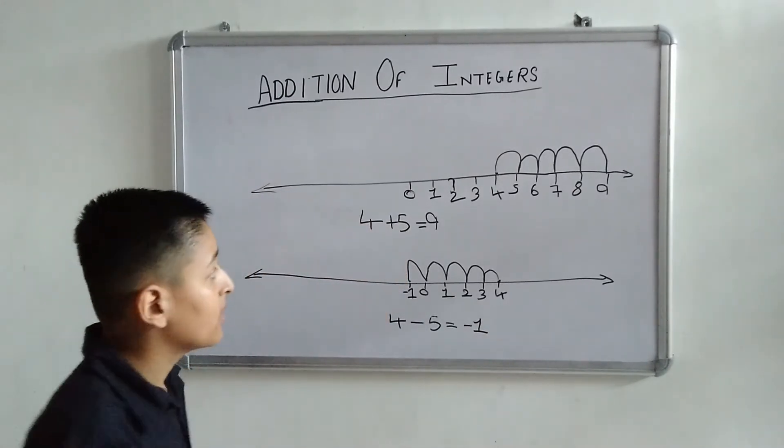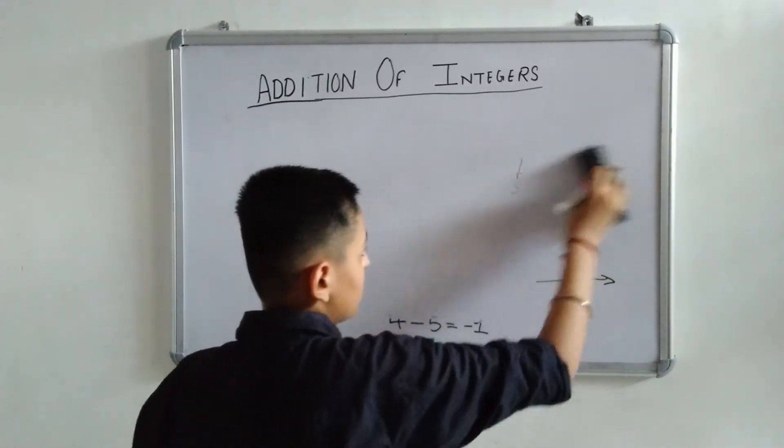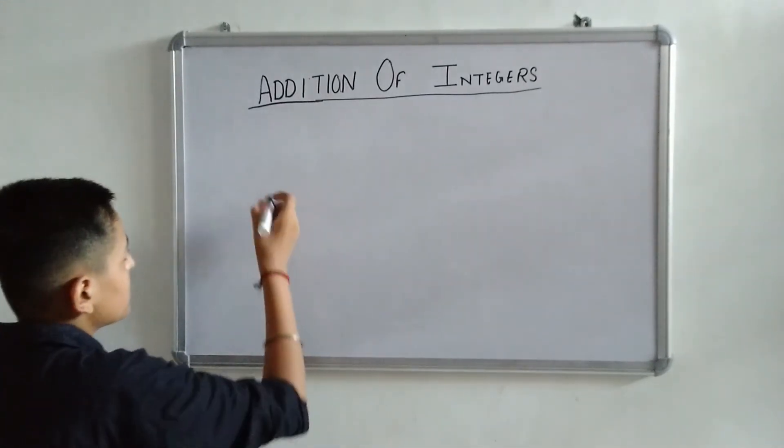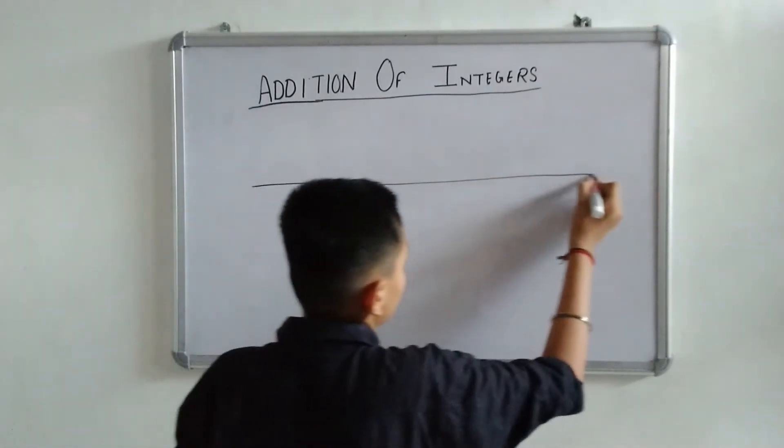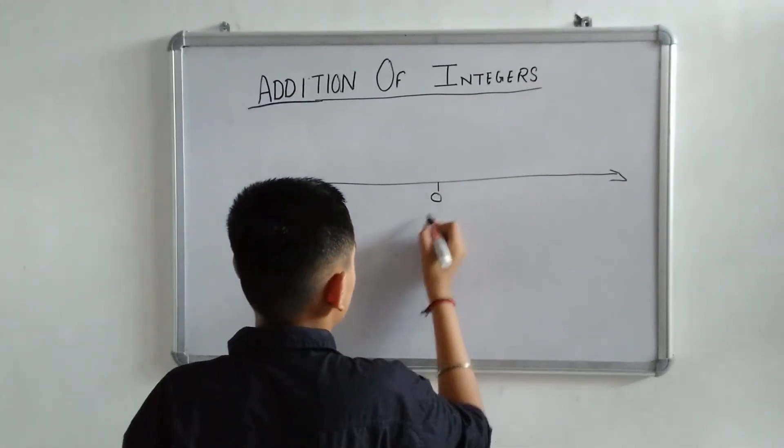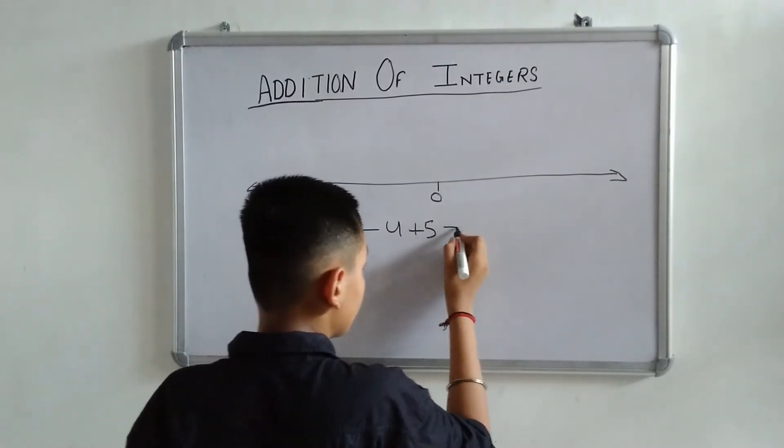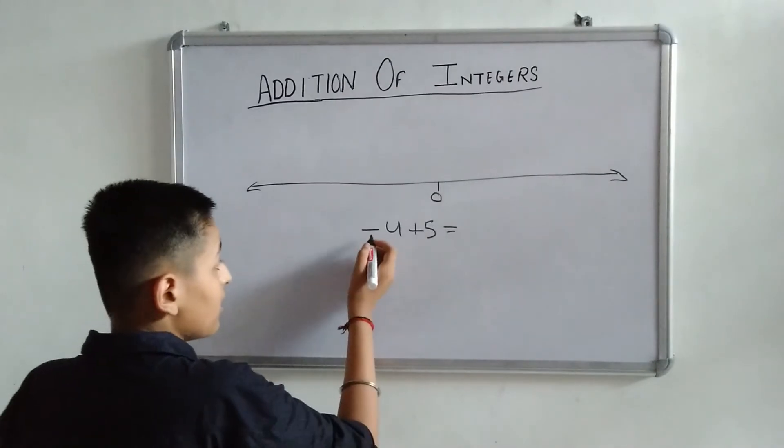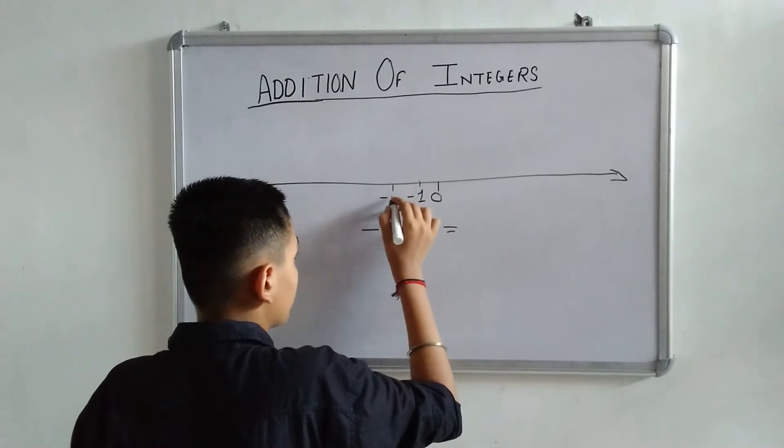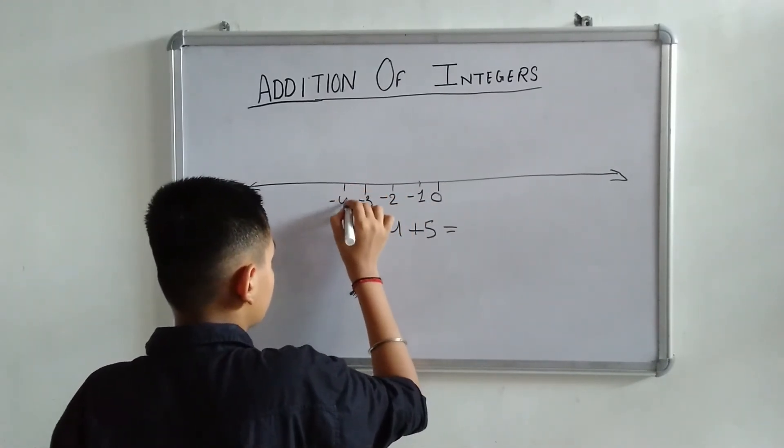Friends! Understood? This is the easy way to understand the number. Another example: 0, minus 4 plus 5. Okay friends! We have to go on minus 4: minus 1, minus 2, minus 3, minus 4.